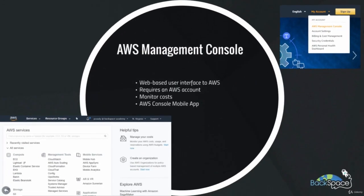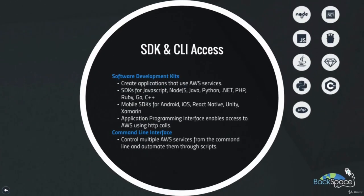The AWS Management Console is a web-based interface to AWS, and we'll use it throughout the course to access AWS services and monitor your costs. You need an account to access it, but once created, you can access it by clicking on the My Account menu from the AWS website and selecting Management Console. There's also an AWS Console mobile app, great for tablets. You can also access AWS resources through the many software development kits, allowing you to create applications that use AWS as a back-end, with SDKs for all major languages and a mobile SDK. It's also possible to access AWS with direct HTTP calls using the AWS REST API.